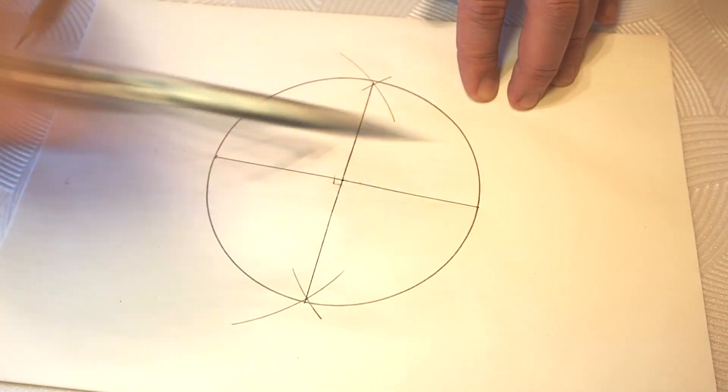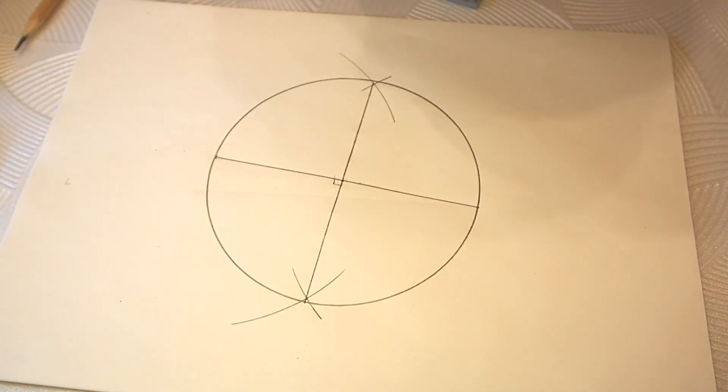What do we need to do next? The next stage is to divide one of the line sides into two equal parts. Once again, our compass will come in handy.